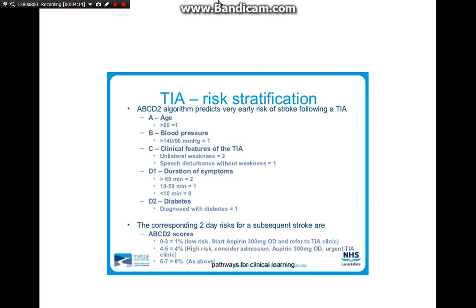We have to stratify what to do if the patient is having a TIA using the ABCD2 score. A score of 3 or less means we can discharge the patient and make an appointment at the TIA clinic; a score of 4 or more requires admission. A is age, B is blood pressure, C is clinical features — weakness scores 2, speech disturbance only scores 1. D is duration: more than 60 minutes scores 2, 10–59 minutes scores 1, less than 10 minutes scores 0. Diabetes also scores 1 point.